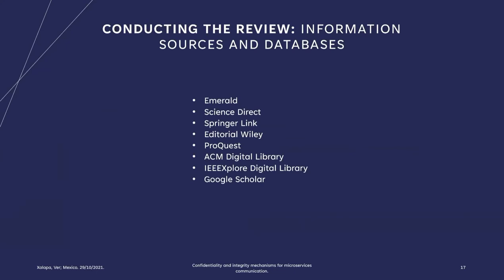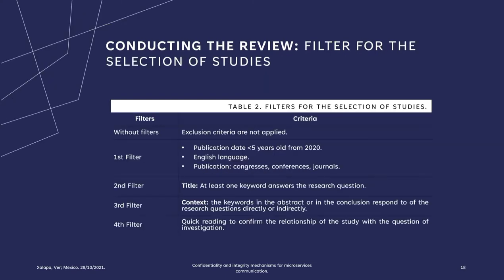The search process for the systematic literature review was an automated search of conference proceedings and articles from information sources and databases. The sources of information consulted were Emerald, ScienceDirect, SpringerLink, Wiley, ProQuest, ACM Digital Library, IEEE Xplore Digital Library, and Google Scholar. For the selection of studies, as Kitchenham and Charters suggest, we established a systematic search strategy with inclusion and exclusion criteria to identify the most relevant studies in the literature. Table 2 summarizes the criteria applied in the systematic literature review.